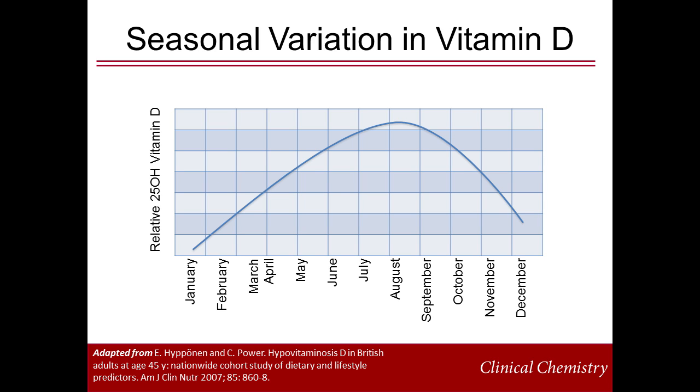Further north or south to 52 degrees, for example in Edmonton, Canada or parts of the UK, this ineffective winter period runs from October through March.